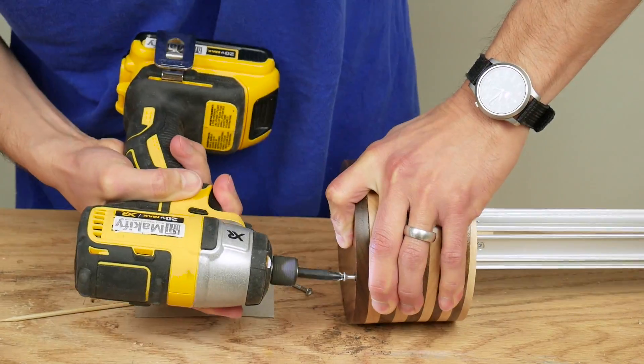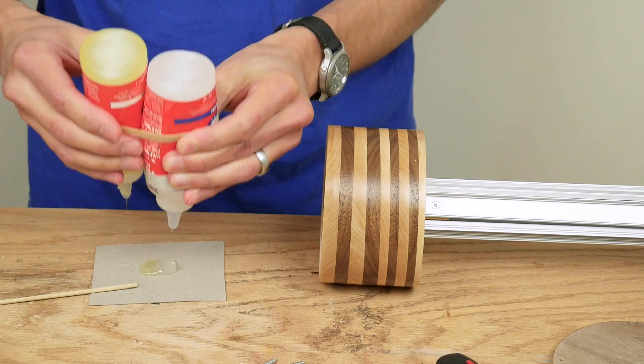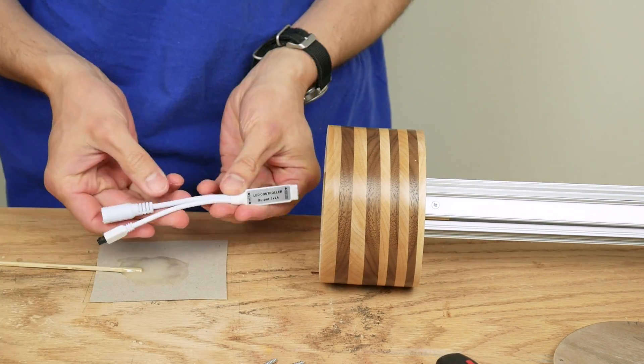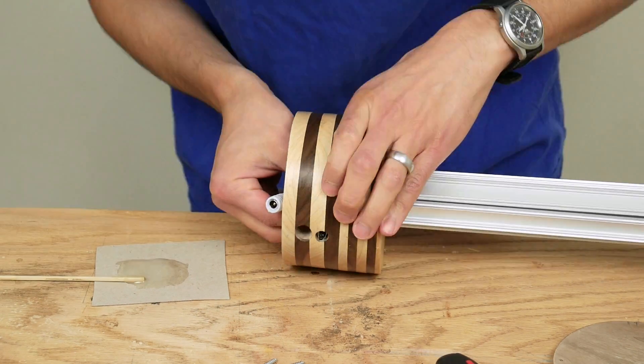I unscrewed the bottom of the lamp. And mixed up some quick set epoxy. And epoxied the power plug and the sensor of the LED controller into the holes I drilled earlier.